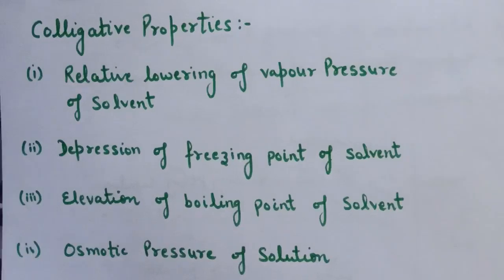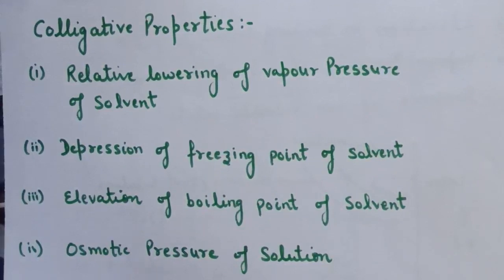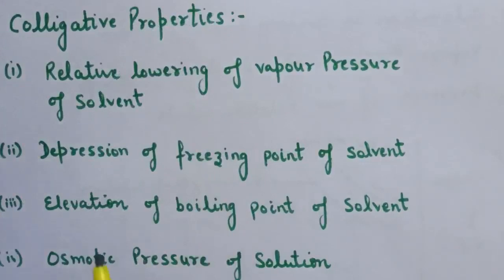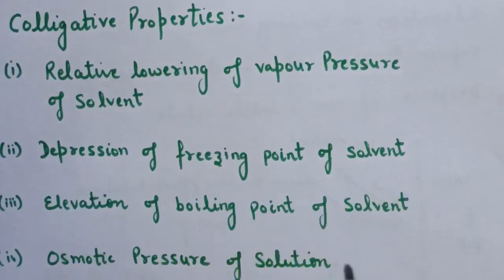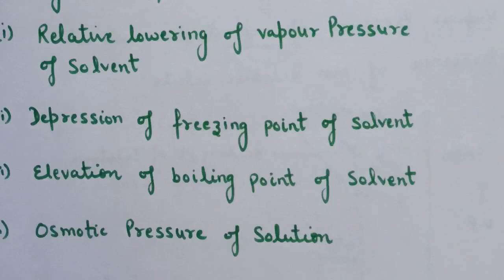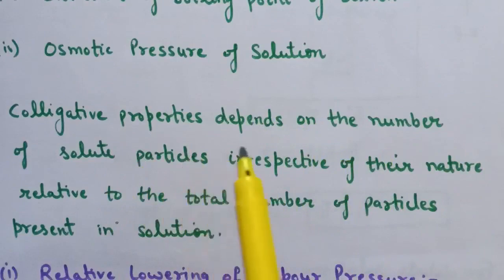Now the next topic is colligative properties. As we have learnt in Lecture No. 1, the vapor pressure of solution decreases when a non-volatile solute is added to a volatile solvent. There are many properties of solutions connected with this decrease of vapor pressure: relative lowering of vapor pressure of solvent, depression in freezing point, elevation of boiling point, and osmotic pressure of solution. All these properties depend on the number of solute particles irrespective of their nature, and such properties are called colligative properties.